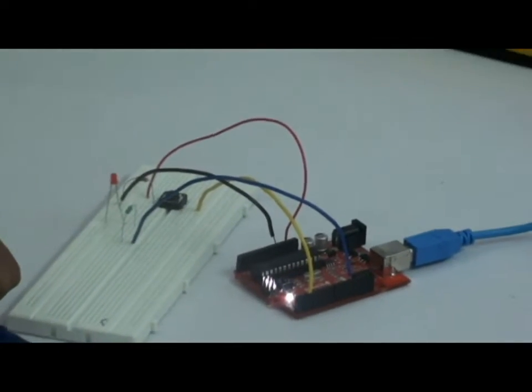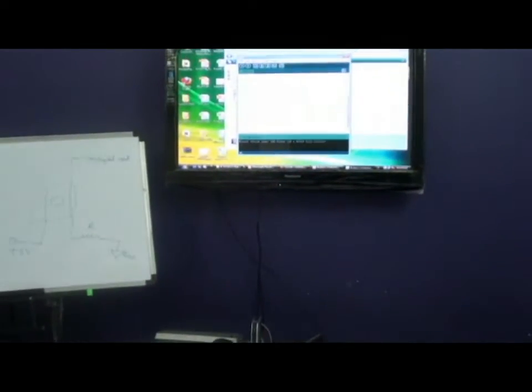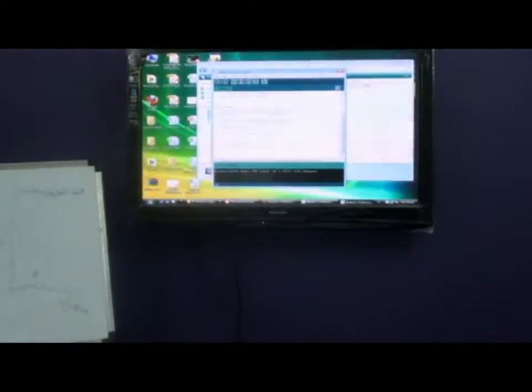And this is how the code goes. We are reading an input from a particular pin. And we are going to make an LED high or low depending upon the input we are getting from the button. This is the code. Now I am just going to upload the code.